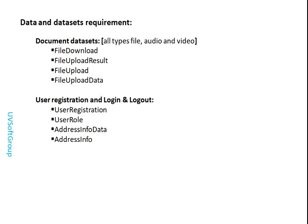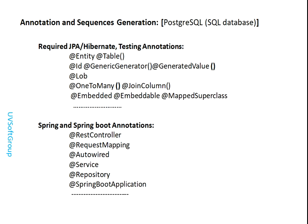We divide the dataset requirements into: file upload and file documents, user registration, user roles, and address info data. File documents cover all types of file formats, audios, and video record content for the application. Here you can see the major annotations, the sequence generation strategies, and the many-to-one relation mapping between tables.